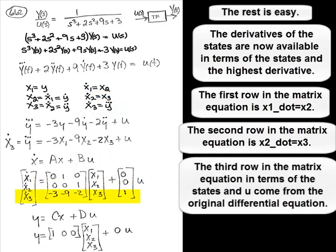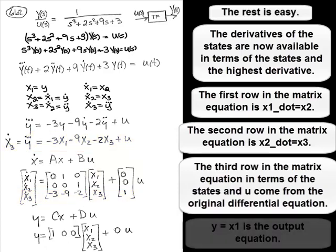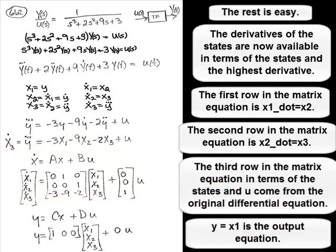The second row in the matrix equation is X2 dot equals X3. The third row in the matrix equation, in terms of the states and U, come from the original differential equation. Y is equal to X1, that's the output equation.